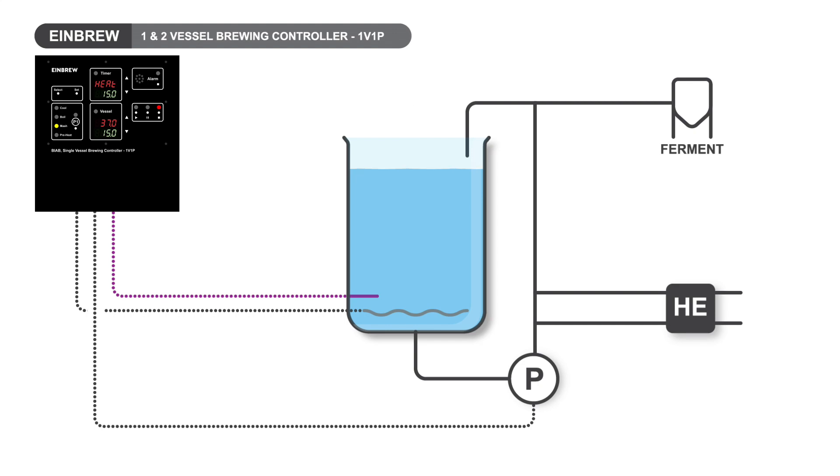Decide your recipe, input the various temperatures and times, including hop insertion times, fill the vessel and start preheating to the mash-in temperature. The 1v1P will heat the water and alarm to notify you that the mash-in temperature has been reached. It will maintain the temperature until you insert the grain and click to proceed.